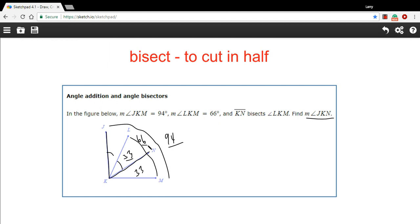Since the whole thing is 94, and this part of it is 66, we just take 94 minus 66. And what is that, 28?